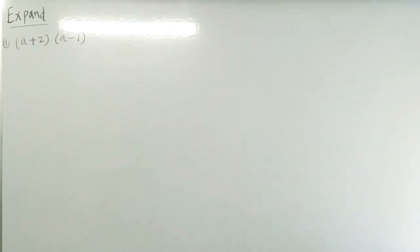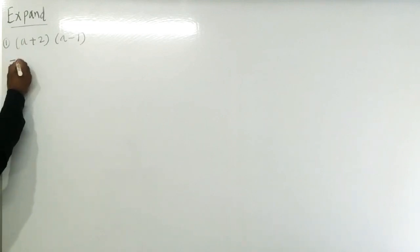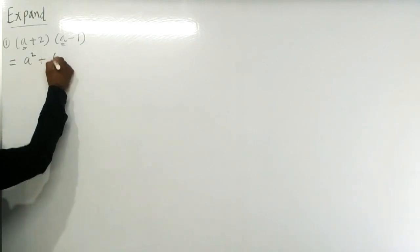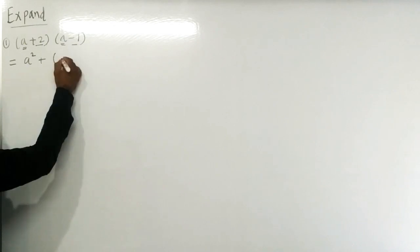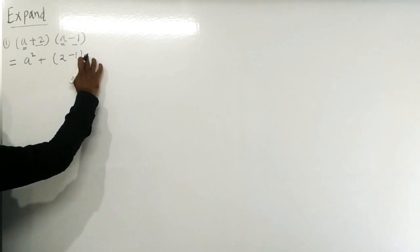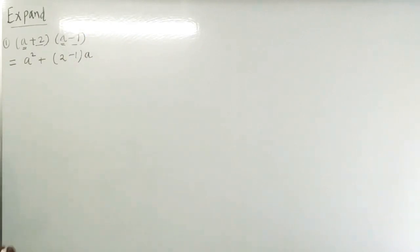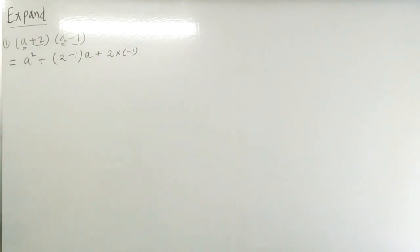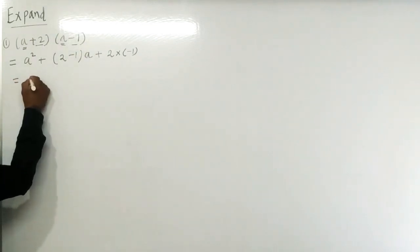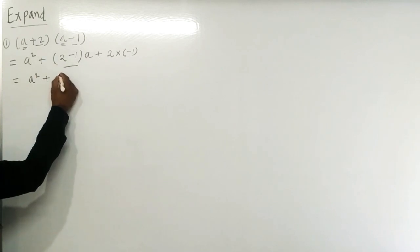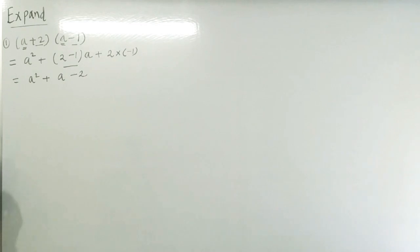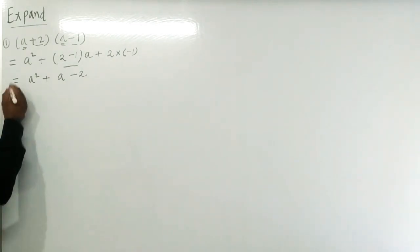Example 1: Expand (a + 2)(a - 1). Using the expansion formula, the first term is a squared, then plus (a + b) where a is 2 and b is minus 1, giving (2 + (-1)) times a, which is 1 times a. And a into b is 2 times minus 1, which is minus 2. So the answer is a squared plus a minus 2.